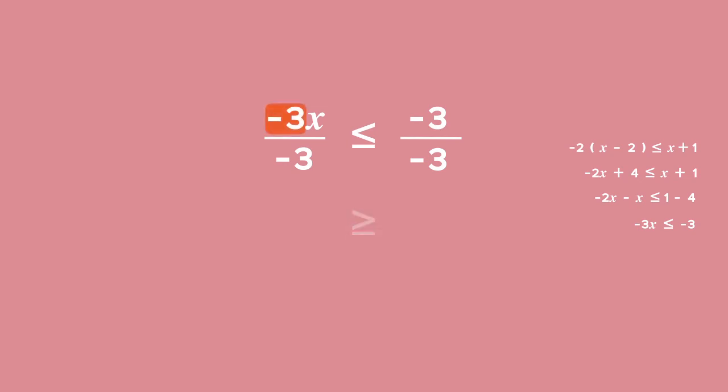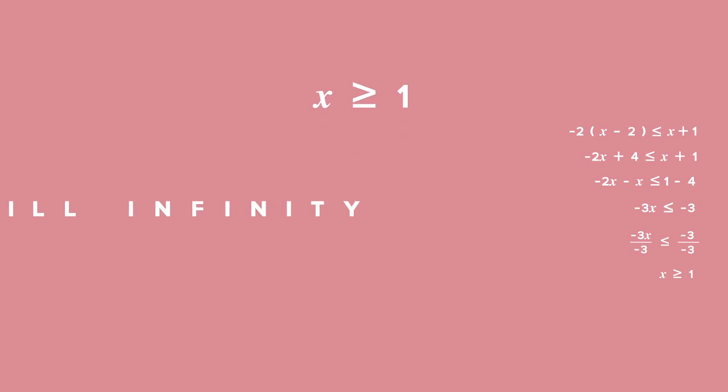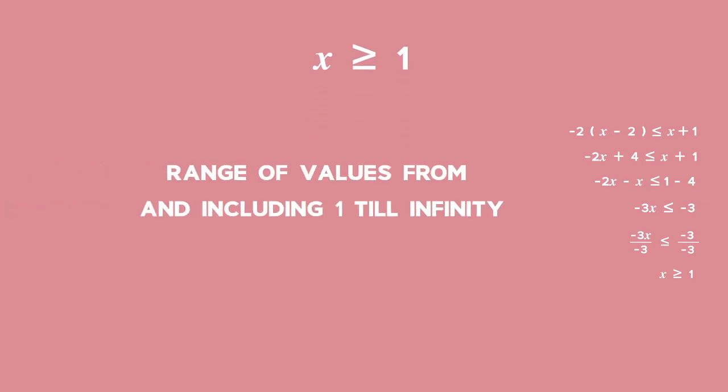Therefore, we get minus 3 divided by minus 3 will give you 1x is greater than or equal to minus 3 divided by minus 3, which is 1. The solution is x is greater than or equal to 1, all the range of values from and including 1 till infinity.